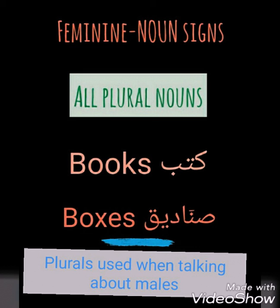Then we have plurals. Plurals in Arabic are treated as feminine words. For example, we have Sanadiq and Qutub — and obviously none of them is ending with the closed Taa, the shortened Alif, or the elongated Alif, but they are treated as feminine words. Of course, the exception here is plurals when talking about males — men and boys, etc.